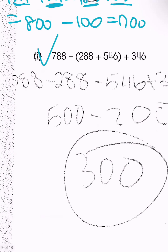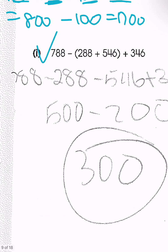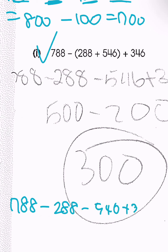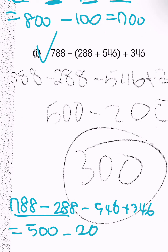Now looking at the next example: distributing the negative sign, doing the first two gives 500. Then 546 minus 346 is negative 200... wait, that gives 500 minus 200 = 300 as the answer.